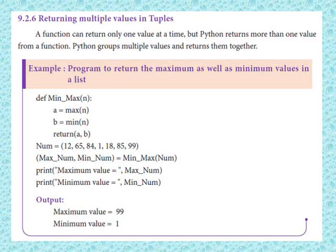Using a function method, let's look at a simple example program: a program to return the maximum as well as minimum values from a list. We can find both the maximum value and minimum value. The function is defined using def, and the function name is min_max.